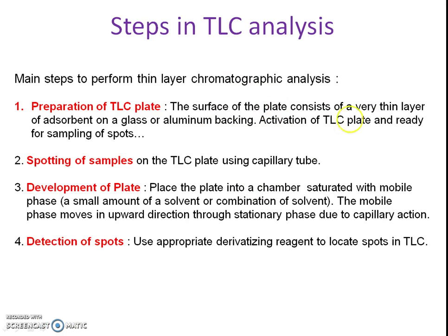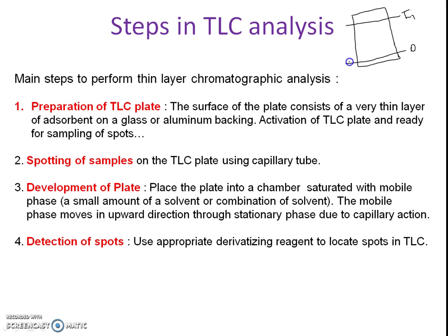When proceeding with TLC analysis, we consider different steps. First, prepare a TLC plate — a thin layer of adsorbent is coated onto an inert support, which may be glass or plastic. After the slurry of adsorbent is prepared and coated, a film is formed and the plate is activated. Then two lines are drawn on the plate: one is the origin line and another is the finishing line, up to which we allow the solvent to move. Next, the samples — dissolved in a specific solvent — are spotted onto the plate.